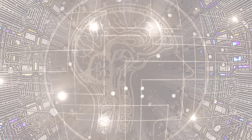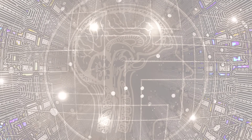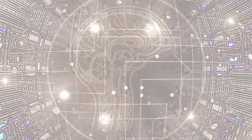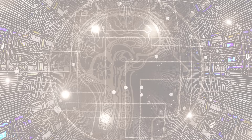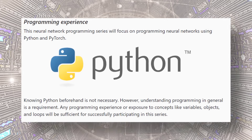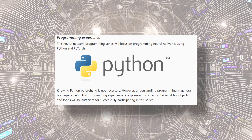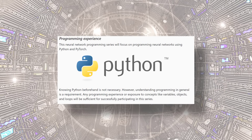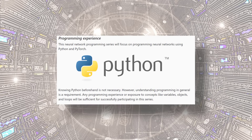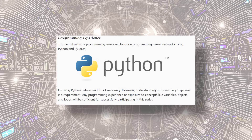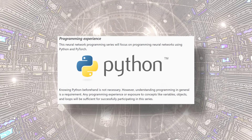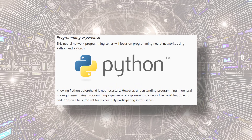There are two primary prerequisites needed for this series: programming experience and neural network experience. In terms of programming, we'll be using Python in this series. Knowing Python beforehand is not necessary; however, understanding programming in general is a requirement. Any programming experience will do — if you're already familiar with concepts like variables, objects, and loops, that type of information is all you'll need to successfully participate in this series.